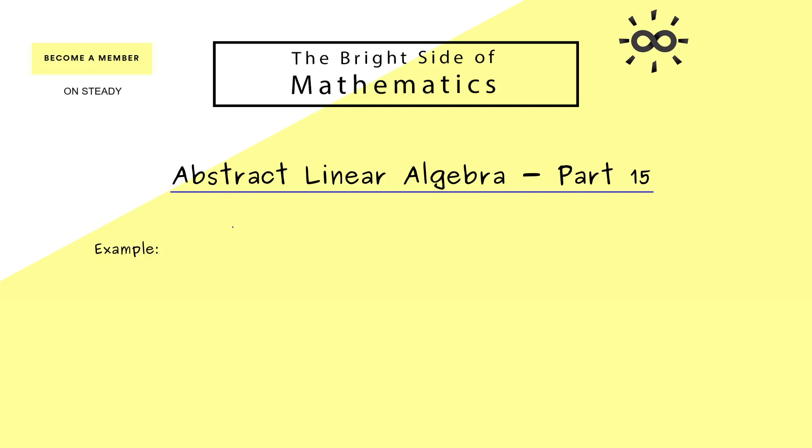Let's first start by recalling the one dimensional case and by looking at an example for that. In order to keep it simple, let's say we have R² together with the standard inner product. Moreover, let's consider a vector x in R² that we want to project onto a line, and a line is always given by a non-zero vector r.